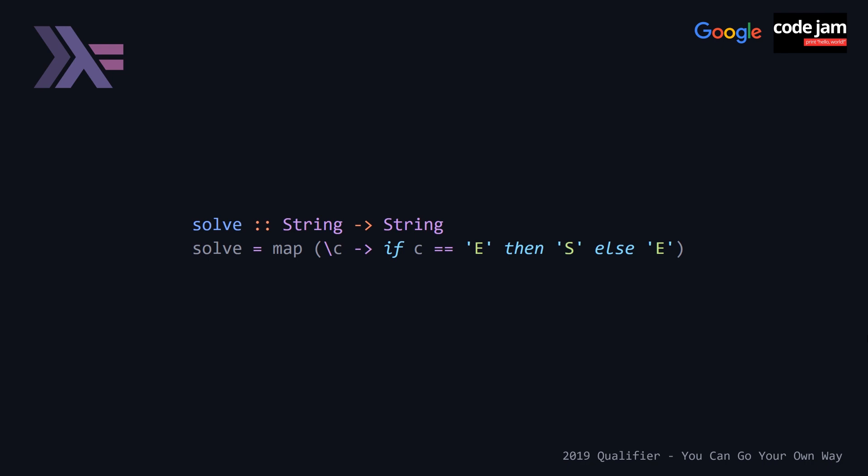The last thing to talk about is the time complexity, which for each of these solutions is going to be linear, due to the fact that we are only ever looping or recursing over the length of the characters in our string. One other thing to note: I have omitted all of the code that reads input and outputs the result in the format that Google Code Jam requires — that being 'Case #number: answer'. All of that code is included in what I've posted to GitHub, and the links are in the description below.